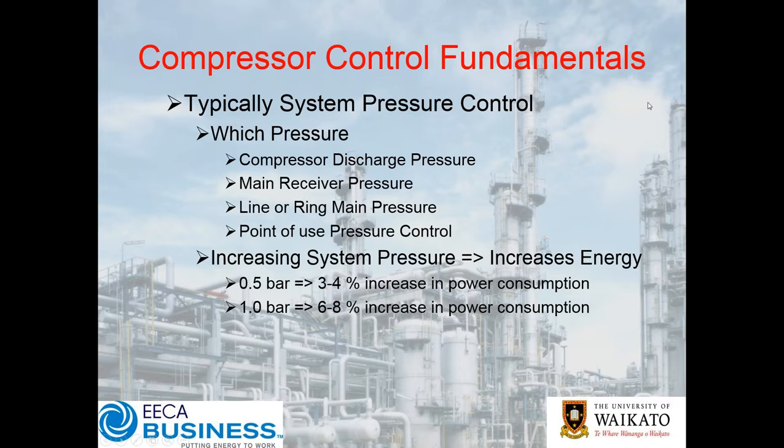On a typical system pressure control, the question I want you to think about is: generally most systems are just looking at the discharge pressure of the compressor, as opposed to a main receiver pressure, ring main pressure, or point-of-use pressure control. What happens is your change in demand occurs out at your point of use, and depending on how long your distribution line is, it could take quite some time for that pressure signal to propagate back to the compressor before it responds.